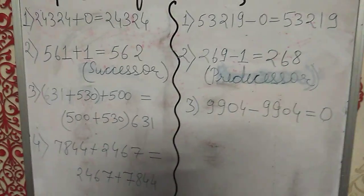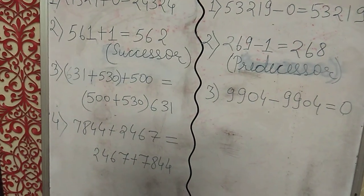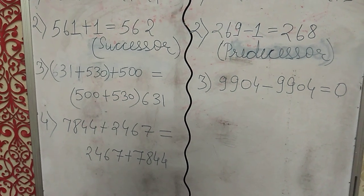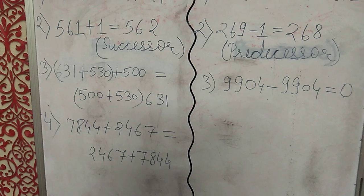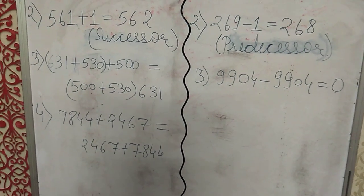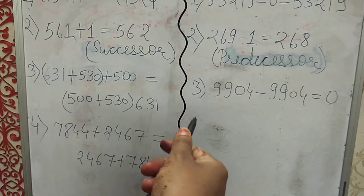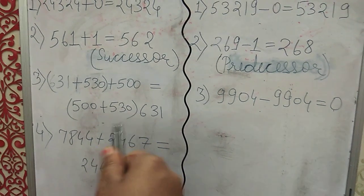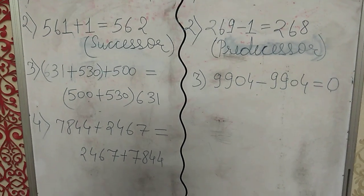Then third property: if there is a group of three numbers to be added, then we can add the numbers in any order. There will be no difference in the sum. Like 631 plus 530 plus 500 is equal to 500 plus 530 and after the bracket 631. The sum will be the same.